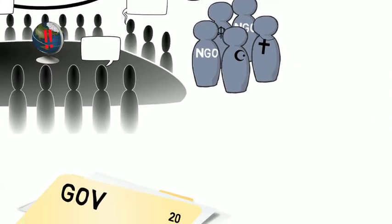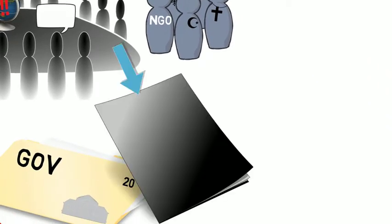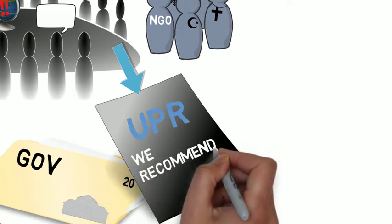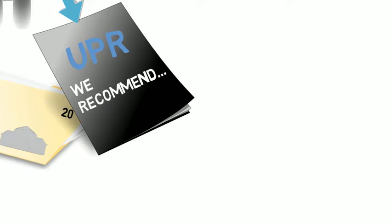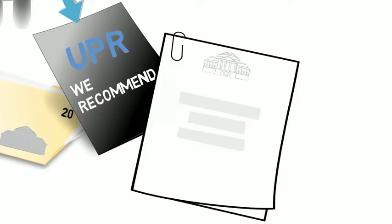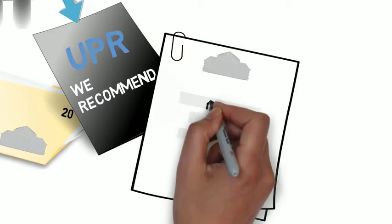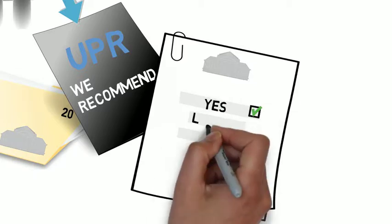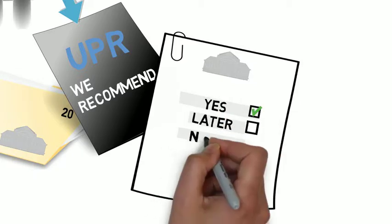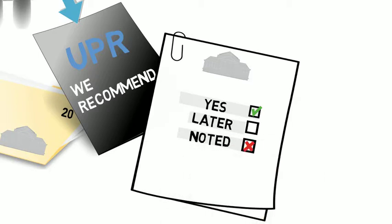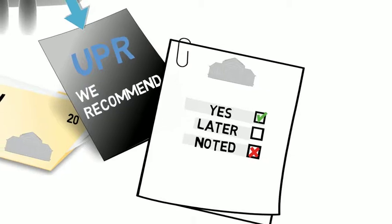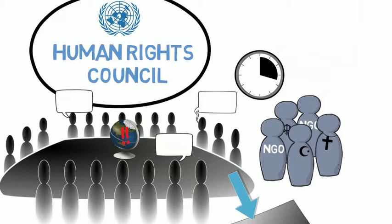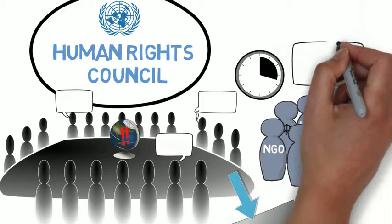The third stage of the process is the publication of a report summarising the review and listing the Council's recommendations to the government. The government then makes a written response to these recommendations. Usually, governments pledge to implement some recommendations, give reasons for delaying work on others, and reject or take note of some recommendations. These written responses are discussed at a regular session of the Human Rights Council, and UN accredited civil society organisations are allowed to make statements at that session.